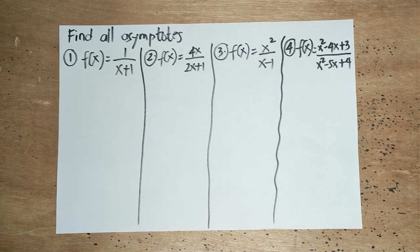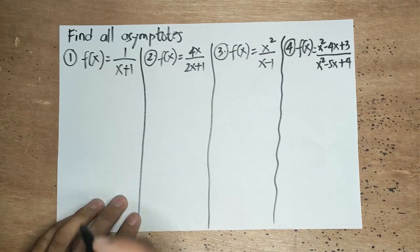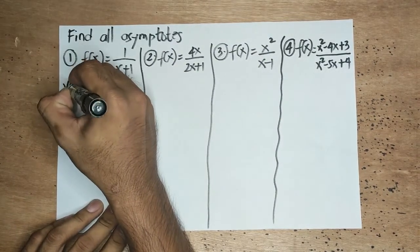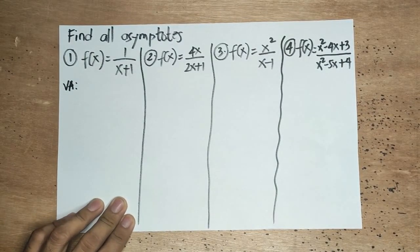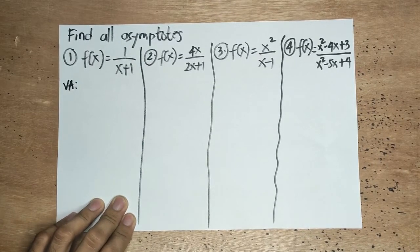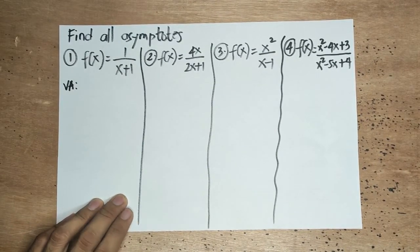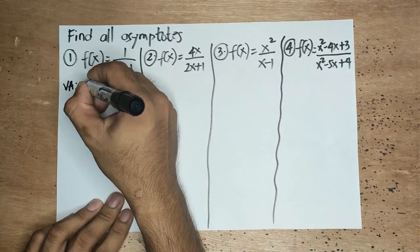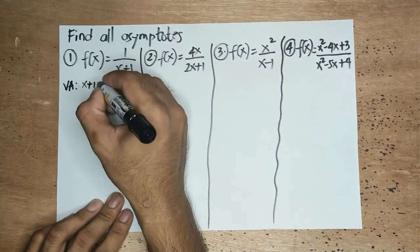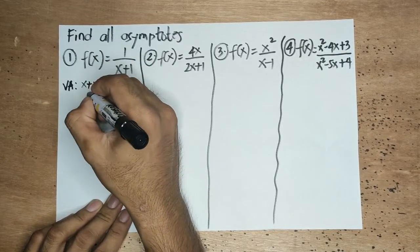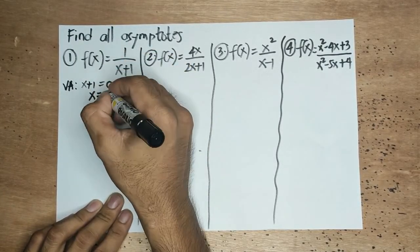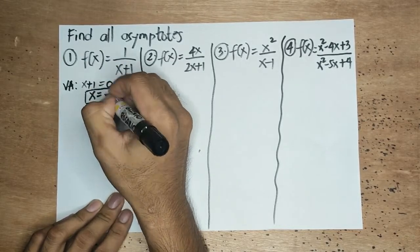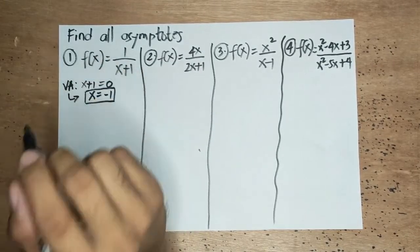The first one: f(x) is equal to 1 all over x plus 1. Let's identify first the vertical asymptote. The vertical asymptote here is the value of x in the denominator that makes it equal to 0 — that makes the function undefined. So we use the denominator, equate that to 0, then solve for x. Transposing positive 1, it will become negative 1. Therefore, x is equal to negative 1 is the vertical asymptote.